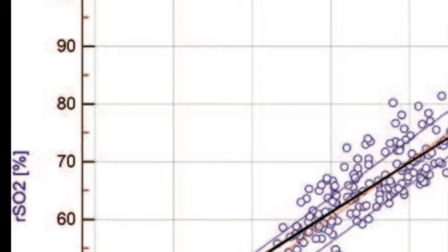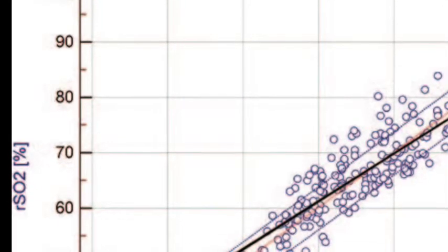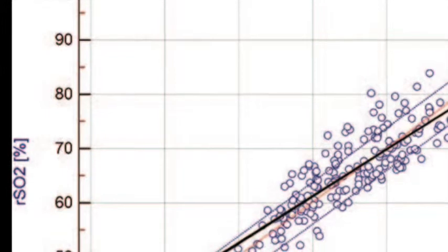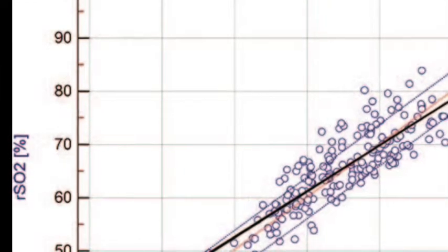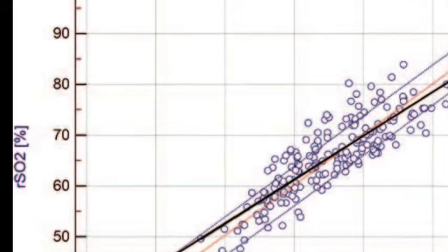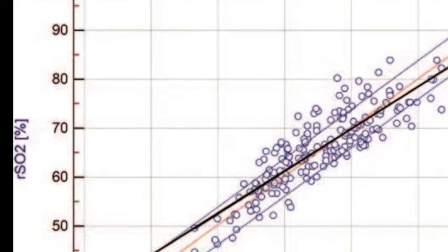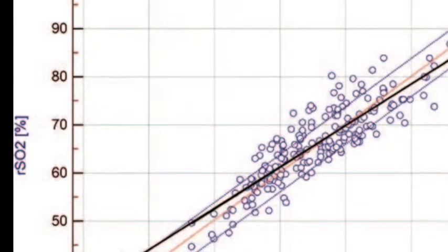Their results are published in this month's issue of Anesthesia and Analgesia and discussed in the article titled Absolute and Trend Accuracy of a New Regional Oximeter in Healthy Volunteers During Controlled Hypoxia. The authors compared regional oximeter results obtained from the left side of the subject's forehead to blood samples taken from the radial artery and internal jugular bulb vein.